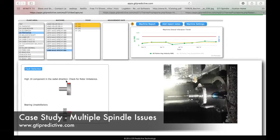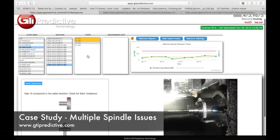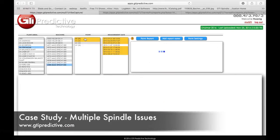It's telling me I've got a 1x component in the radial direction to check for rotor imbalance, but also bearings are unsatisfactory. So let's drill down into that and see what we see.